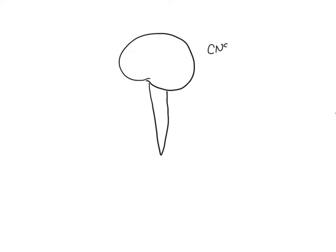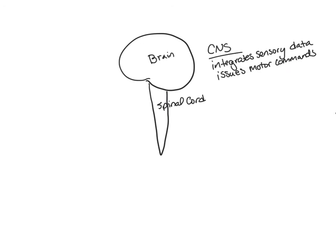Anatomically, the nervous system can be divided into the central nervous system and the peripheral nervous system. The central nervous system is made up of the brain and the spinal cord, and it integrates and coordinates sensory data and issues motor commands. The central nervous system is also responsible for intelligence, memory, and emotion.